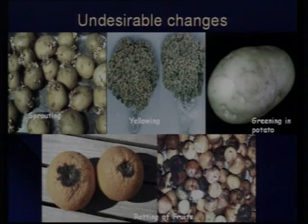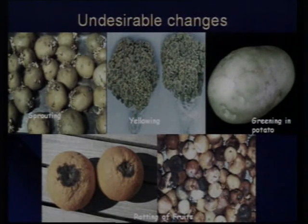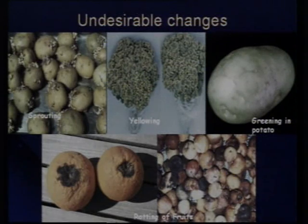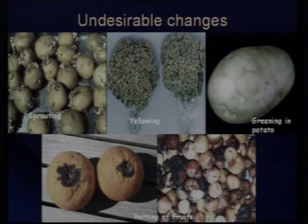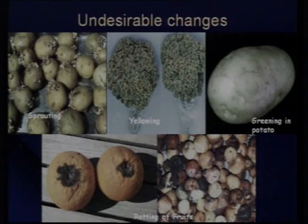If we do not store fruits and vegetables under proper temperature and humidity conditions, potatoes undergo sprouting — this happens because they are kept under very high temperature conditions. Similarly, yellowing occurs in broccoli if the temperature is very high. Potatoes can also turn green if exposed to light. Rotting occurs when the fruit undergoes excessive shriveling due to high transpiration, leading to microbial infections. These are undesirable changes which lead to the end of shelf life — what we call senescence, or in simple terms, the death of cells and breakdown of tissues.